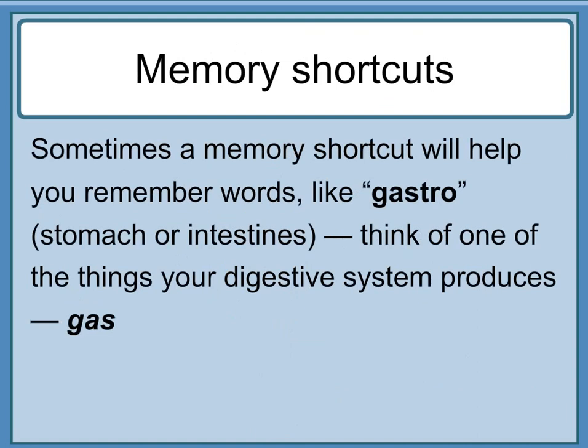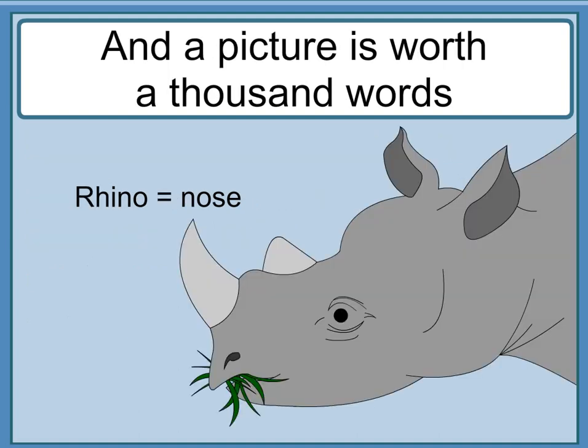Memory shortcuts will help you remember words. For example, 'gastro-' means stomach or intestines — think of one of the things your digestive system produces: gas! And a picture is worth a thousand words: 'rhino-' means nose — think rhinoceros.